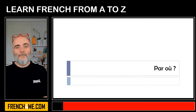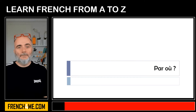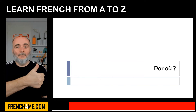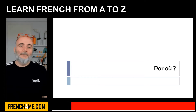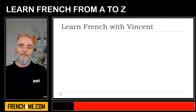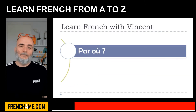In this lesson, we will see together a few questions — six questions to be more precise — in which you will have a 'par où', so after that you will know exactly how to construct them. We can start with 'through where'.